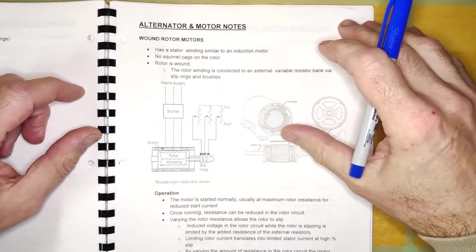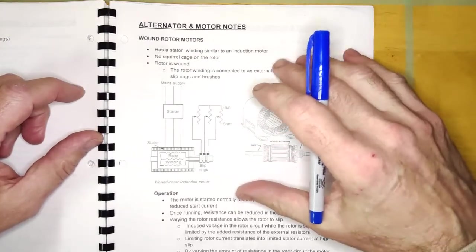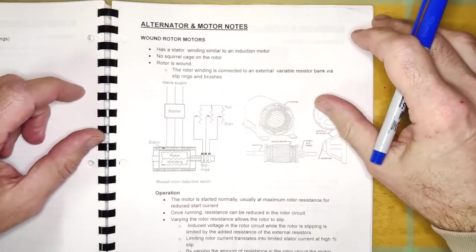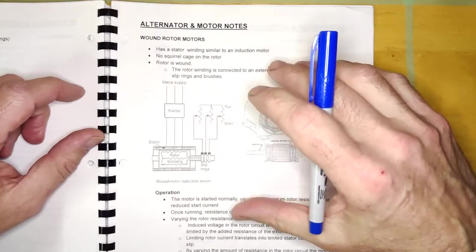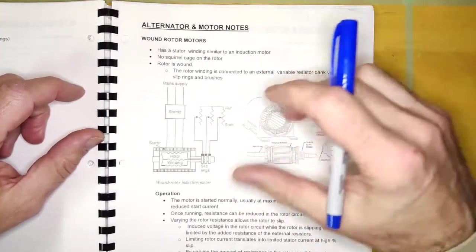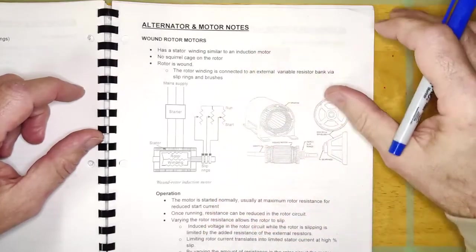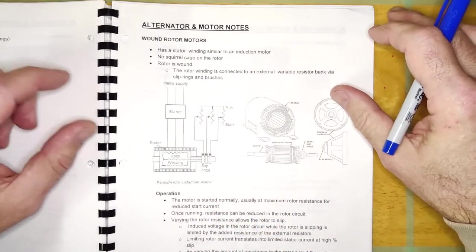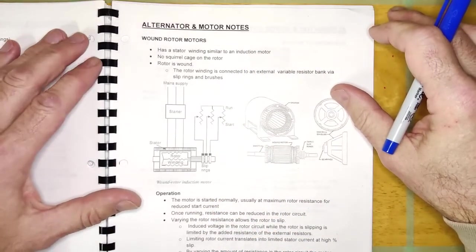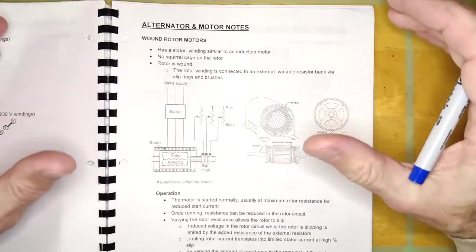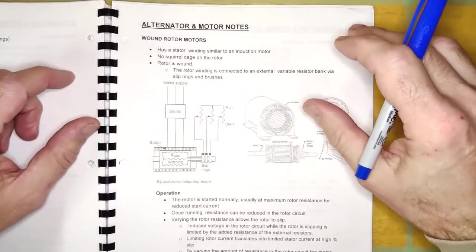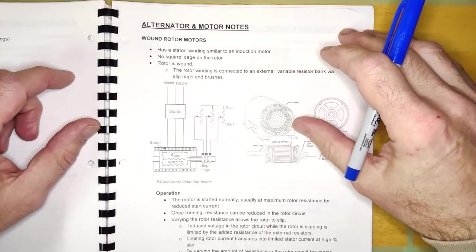And so, any amount of slip that you do will cause a large, large amount of induced voltage in those bars. And because they're really low resistance bars, the voltage induced into those bars is going to cause a large amount of current if there's a bunch of slipping going on. And then, as you know, if you have a large amount of rotor current, you're going to have a large amount of stator current.